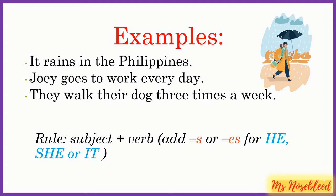As you can see, the rule is to use the subject and the verb. Just make sure that when you use he, she, or it, you add S or ES. As you can see here, Joey goes — that's the ES. It rains. Just make sure you don't say 'Joey go' — you need to put an S or an ES in the present simple.